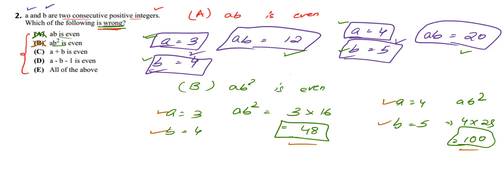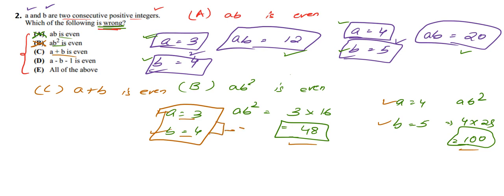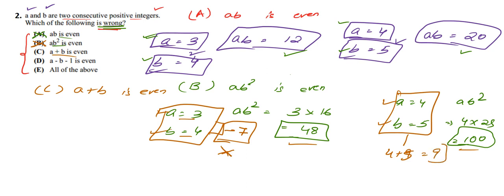Let us check option C: A + B is even. With A = 3, B = 4: 3 + 4 = 7, which is not even. With A = 4, B = 5: 4 + 5 = 9, which is also not even. In both cases the statement does not hold. Therefore A + B is even is a wrong statement, and since we needed to find a wrong statement, option C is a possibly correct answer.